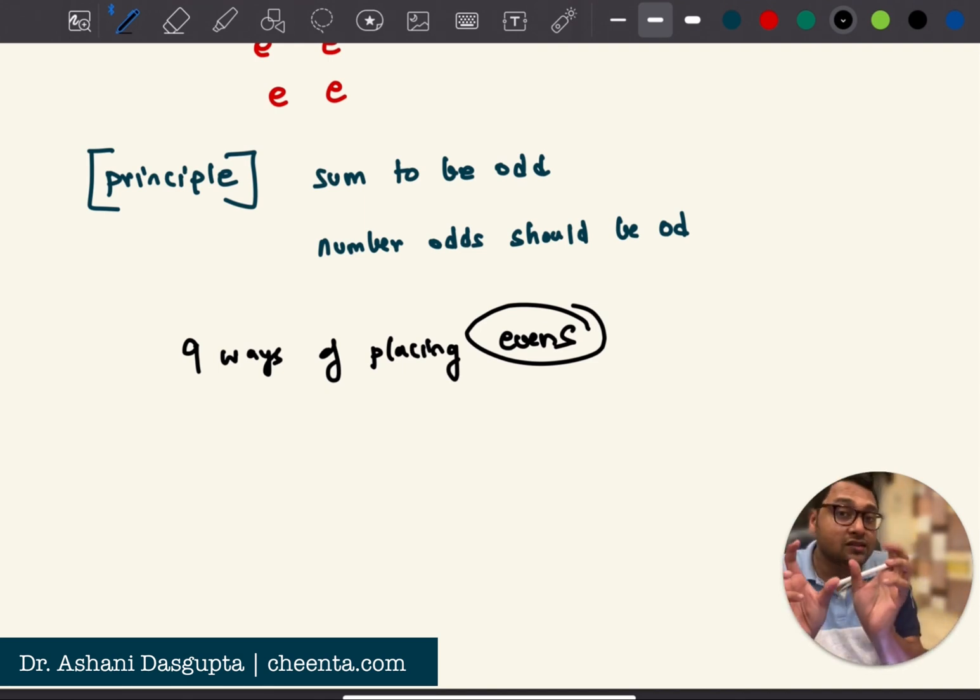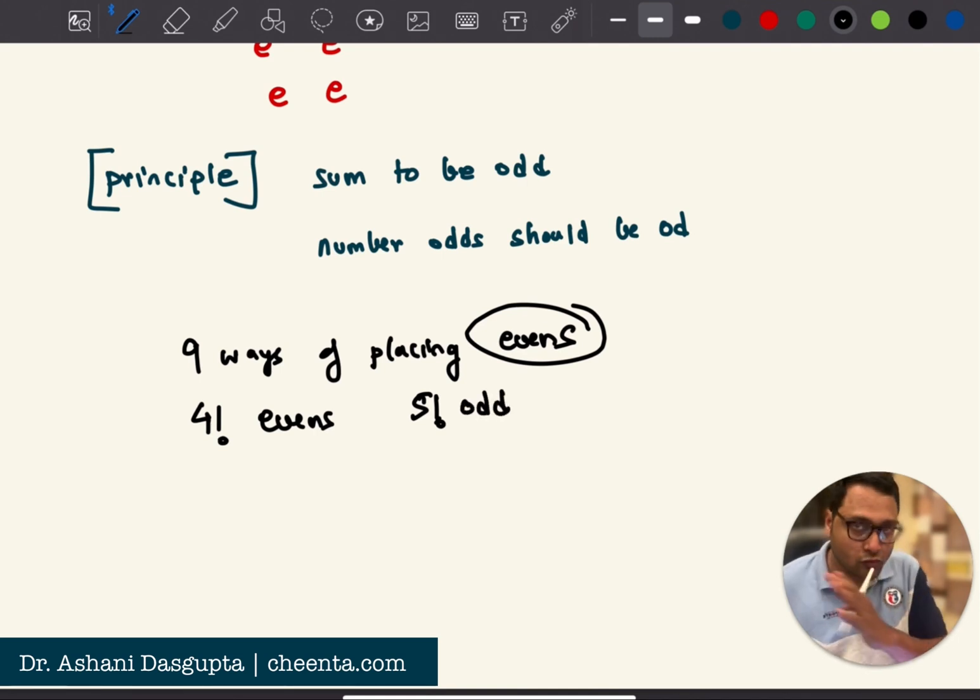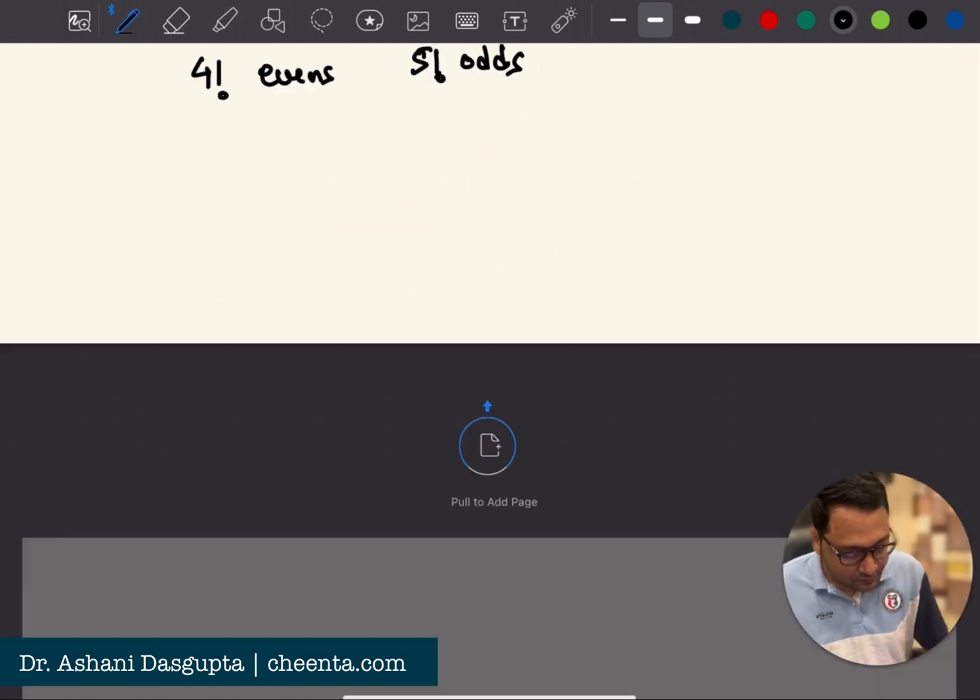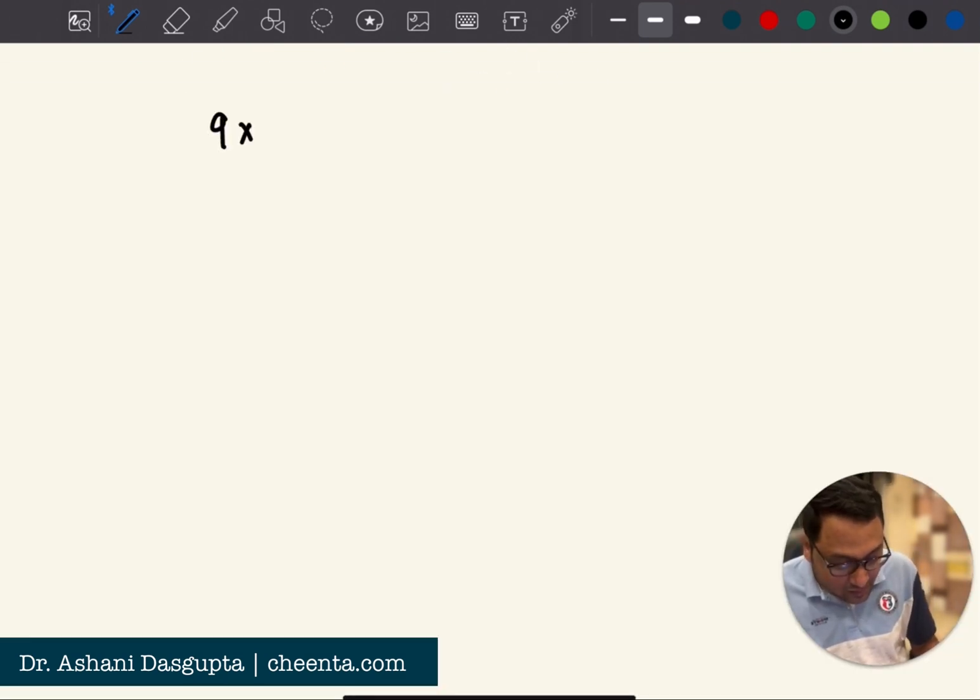Now, once you have chosen the boxes where you will place the even numbers, you can arrange them in four factorial ways. So four factorial ways of arranging the even numbers and five factorial ways of arranging the remaining odd numbers. Up to one to nine, there are five odd numbers. So in total, you have nine times four factorial times five factorial ways of doing this. That's it.